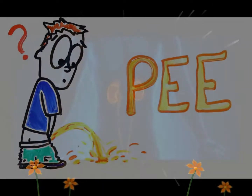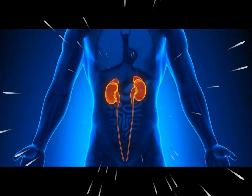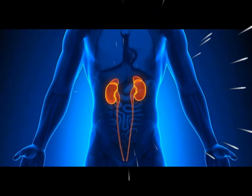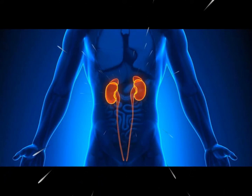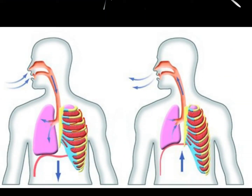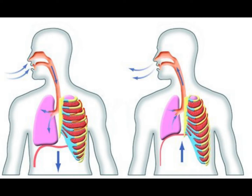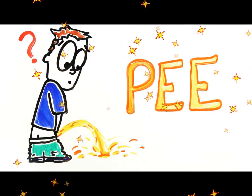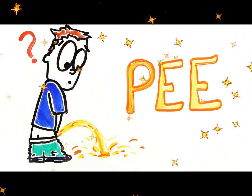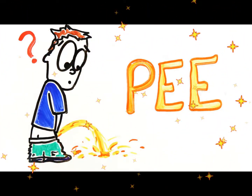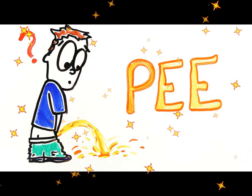There are three ways to get rid of body waste. When you breathe out, carbon dioxide is released. When you go pee, liquid waste or urine is released.